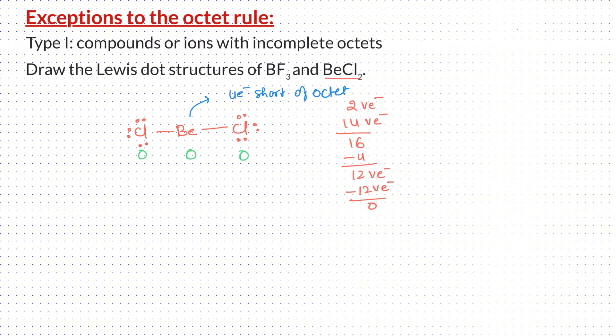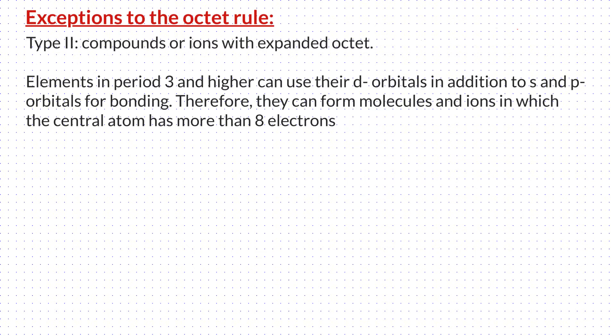If we assign formal charges, all the atoms have zero formal charges. If we transfer any electron pairs from the terminal atoms onto the beryllium as a multiple bond, it increases the formal charges and makes those structures less preferable. Elements in period 3 and higher can use their d orbitals in addition to s and p orbitals for bonding. Therefore, they can form molecules and ions in which the central atom has more than 8 electrons. These molecules or ions are said to have expanded octet electronic configuration.